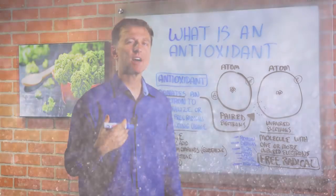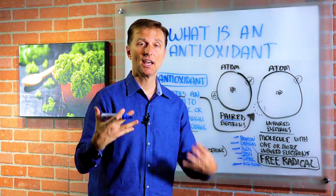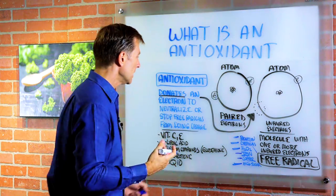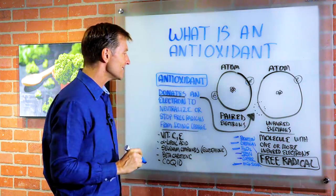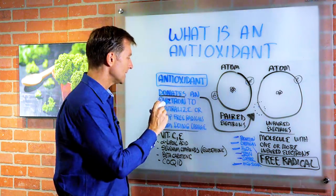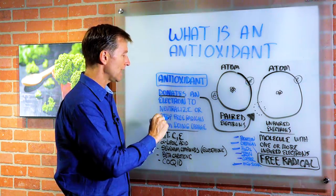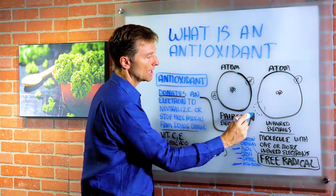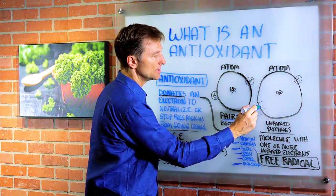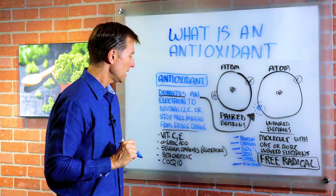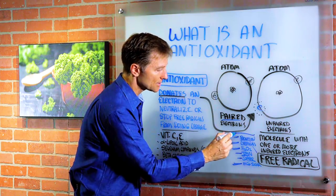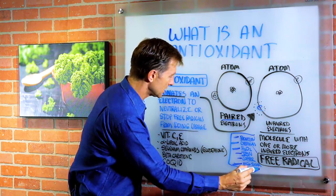High levels of sugar also create a lot of oxidation in the arteries and tissues of our bodies. Antioxidants basically donate an electron to neutralize or stop the free radicals — they donate an electron to balance it out, thereby neutralizing the damaging effects of free radicals.